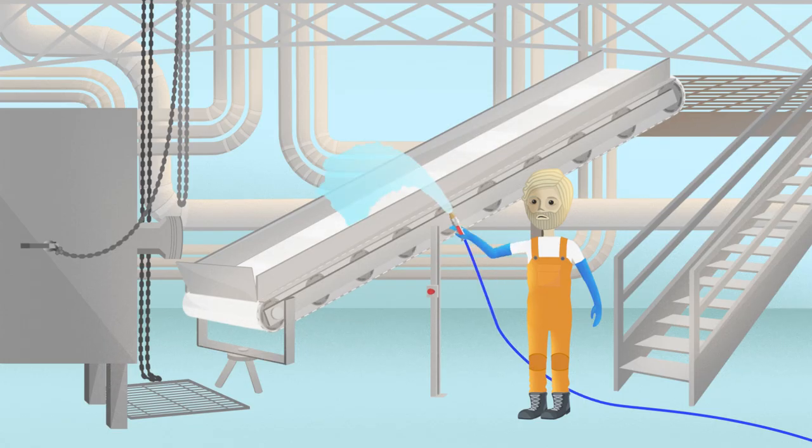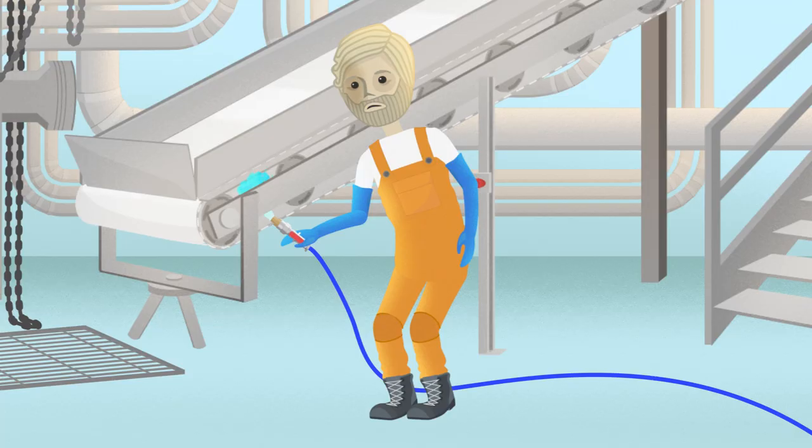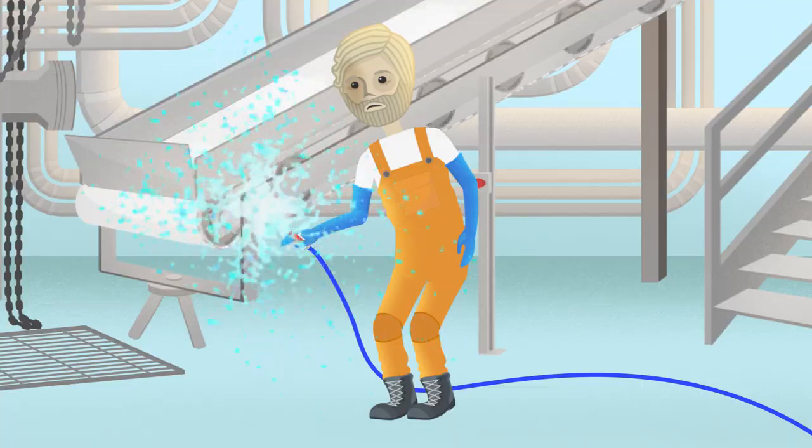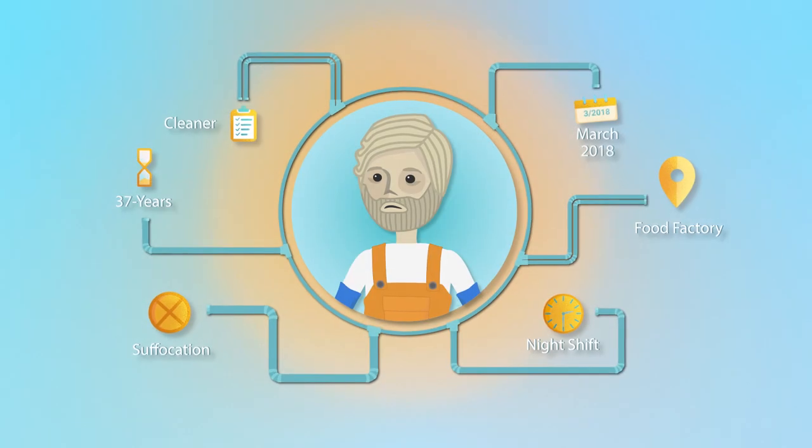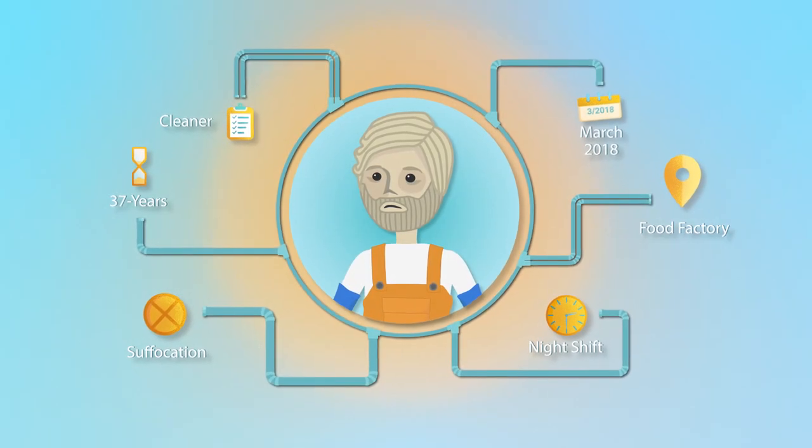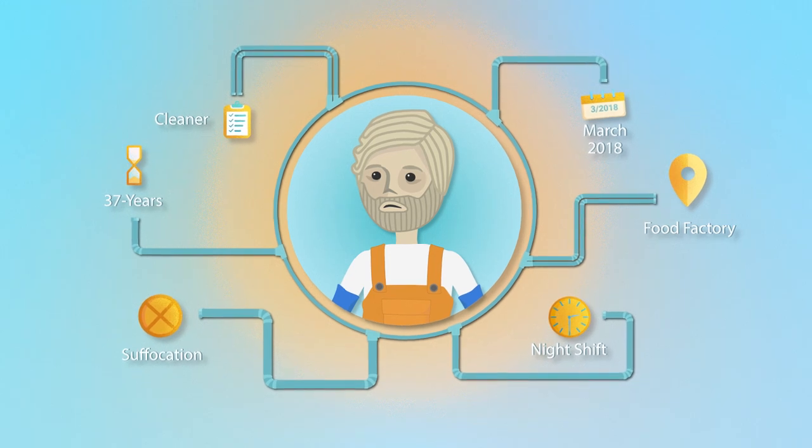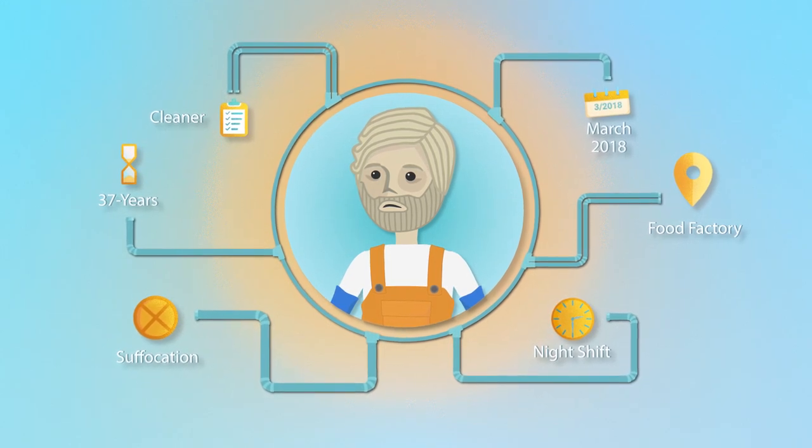The nightshift cleaner's job was to clean the inside and outside of the conveyors. The nozzle of the hose fell into a moving belt. Instinctively, the cleaner reached in to lift the nozzle out without turning off the machine first. Their rubber glove got stuck to the belt and their hand ended up stuck in a gap between the end roller and the belt. The cleaner got trapped against the conveyor's structures.